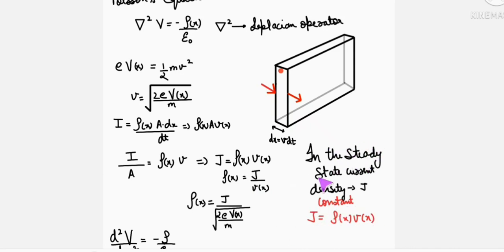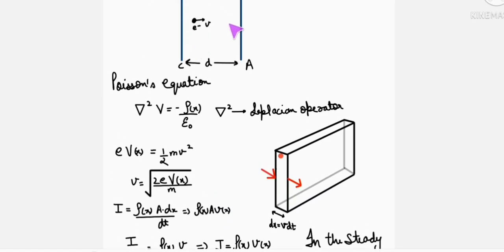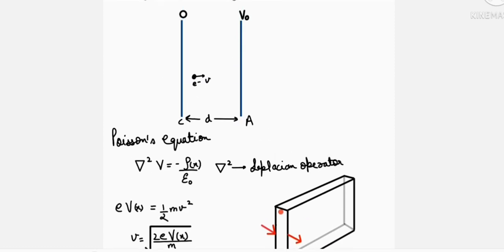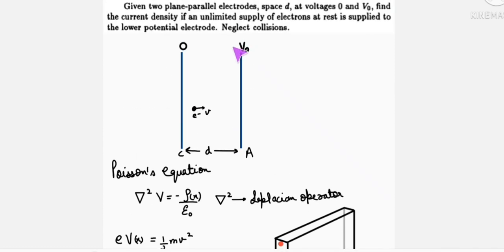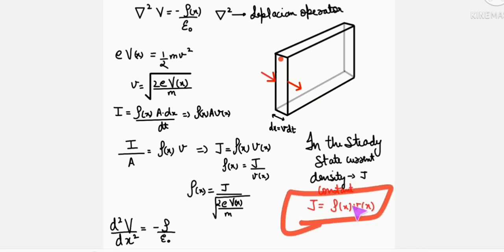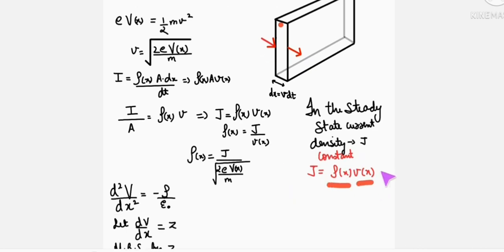Now this current density, in the steady state, will be constant. So if V is increasing, just as electrons move forward, their speed will increase. We can say that the rho, the current space charge density, will be lesser here near the anode. The space charge density will be less, using this expression.